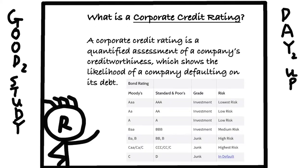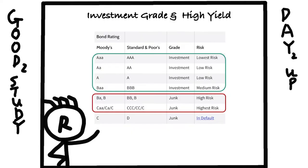In order to understand corporate credit, we need to understand the corporate credit rating system. A corporate credit rating is a quantified assessment of a company's creditworthiness, which shows the likelihood of a company defaulting on its debt. This table gives an overview of how two of the top rating agencies, Moody's and Standard & Poor's, assign ratings.